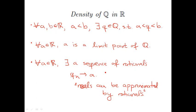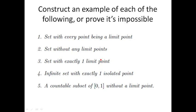Your homework is to think about the following question for class on Tuesday. Construct an example of each of the following sets or prove why it's impossible: a set that has every point being a limit point, a set that doesn't have any limit points, a set that has exactly one limit point, an infinite set that has exactly one isolated point, and a countable subset of (0, 1) that doesn't have any limit points. Some of these are easier than others — some you already have examples of — and some are a little bit trickier. Take some time, really think about this, and I'll see you on Tuesday.